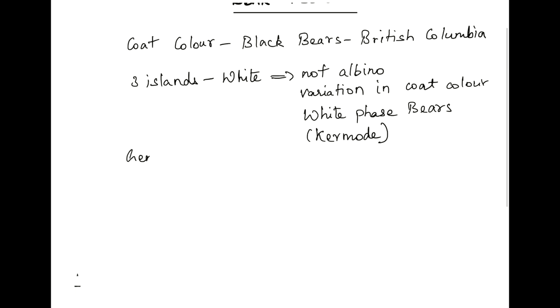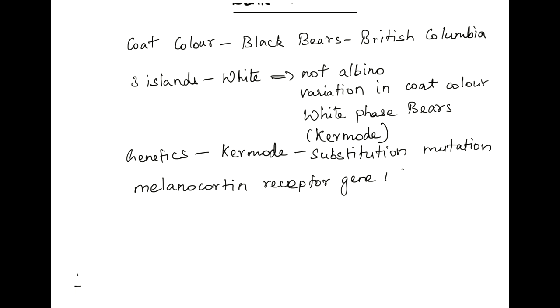The genetics of this coat color in kermode bears shows that it is because of substitution mutation. The gene responsible is called melanocortin receptor gene or MC1R gene. This gene located at codon 298 has the mutation, a substitution mutation which results in the change of amino acid which changes from tyrosine to cysteine.